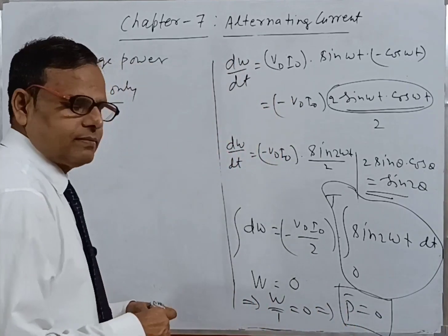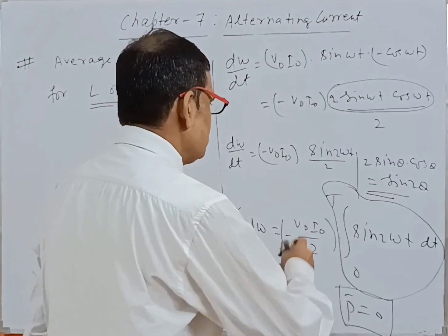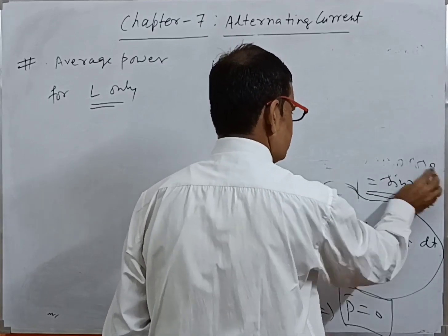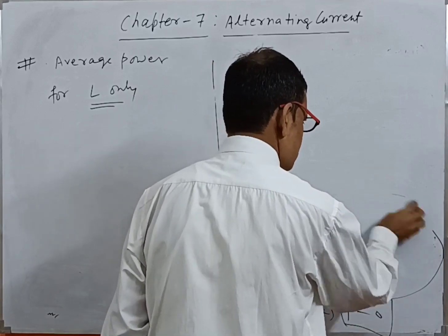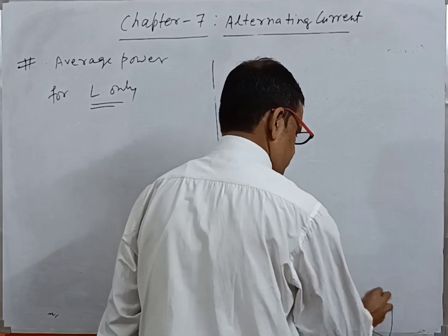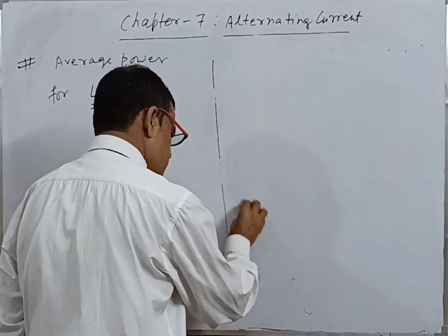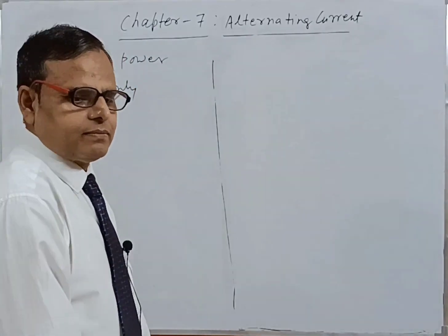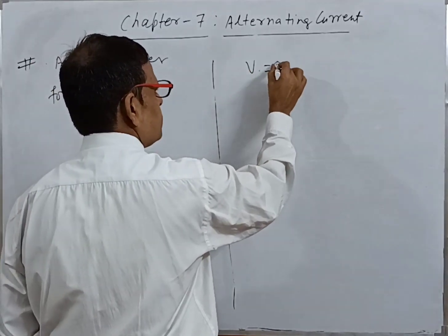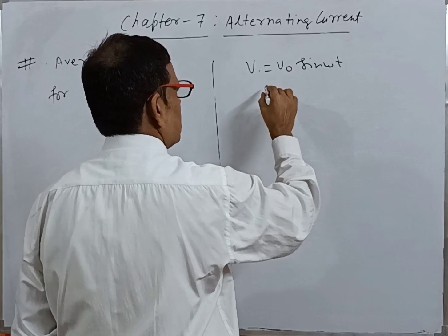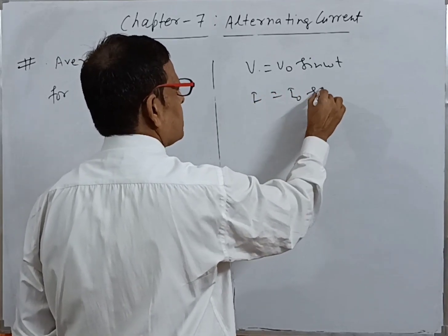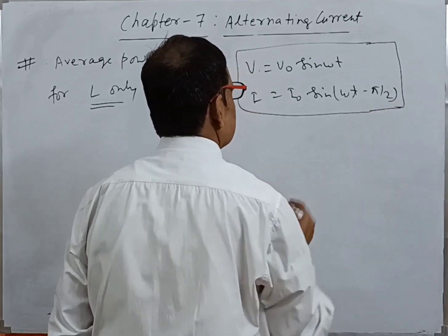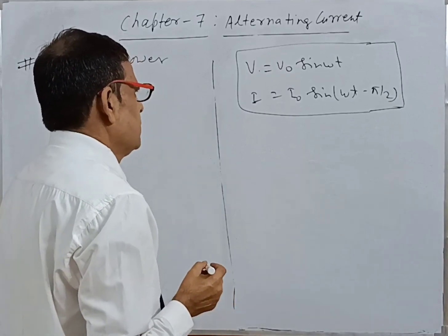In an AC circuit containing L only, the average power is equal to 0. For your knowledge: when we talk about lagging and leading of current with respect to AC voltage — in the circuit containing L only, V = V₀ sin(ωt) and I = I₀ sin(ωt − π/2), so current lags by π/2.